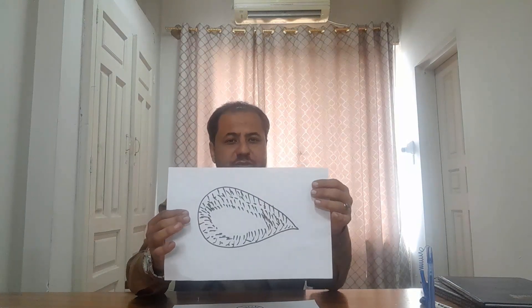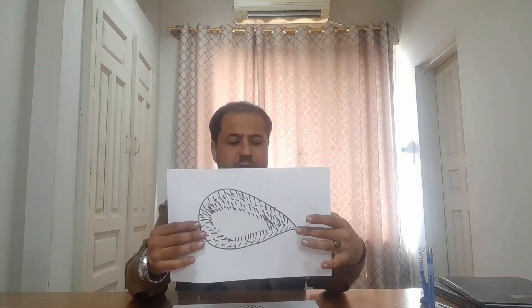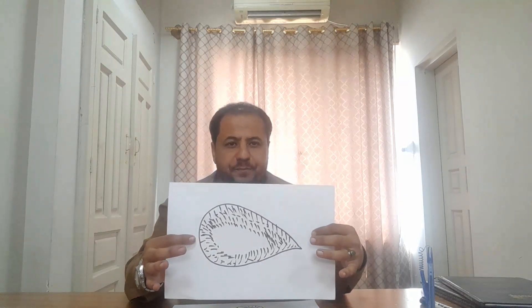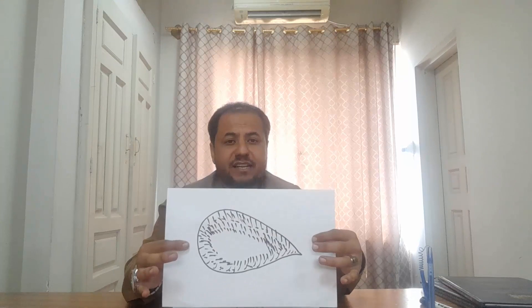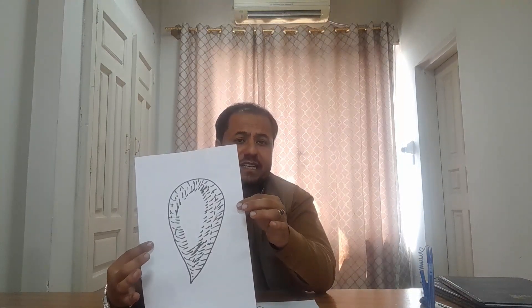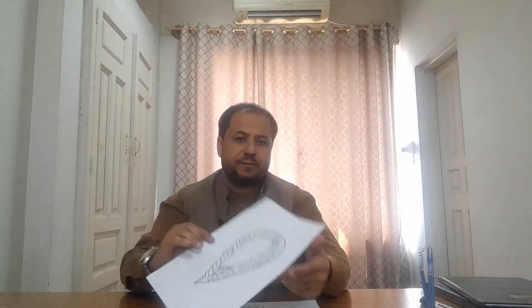On the other hand, dacrocytes are slightly elongated cells — round at one end and pointed at the other end — and they also have a central pallor area. This cell is known as a tear drop or dacrocyte because its shape looks like a tear.